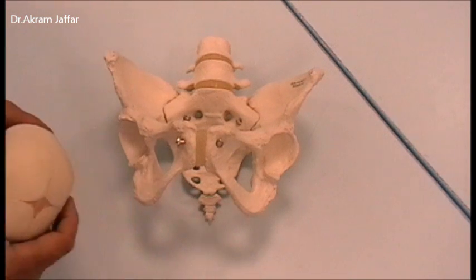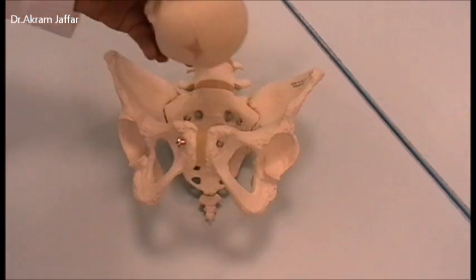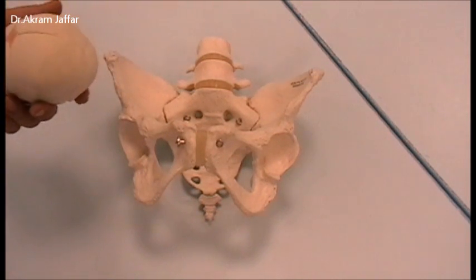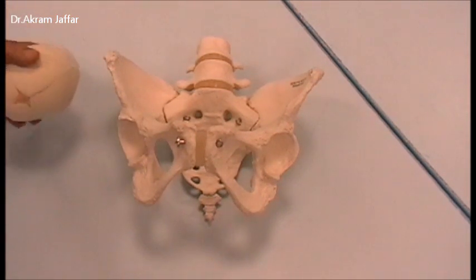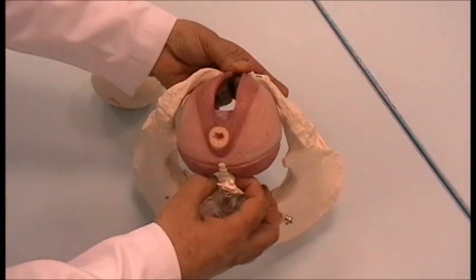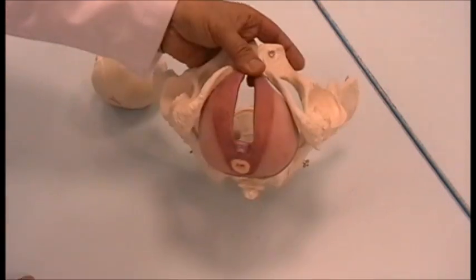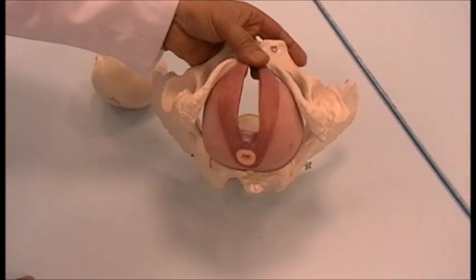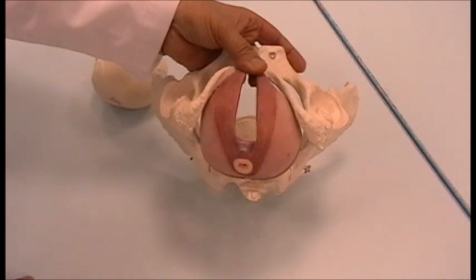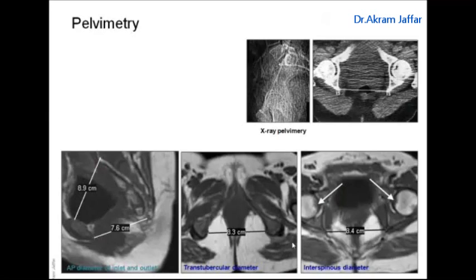This rotation of the fetal head during delivery is provided by the contraction of the levator ani muscle, which forms the funnel-shaped pelvic diaphragm. The contraction of these muscle fibers causes the rotation of the fetal head during its descent through the birth canal.